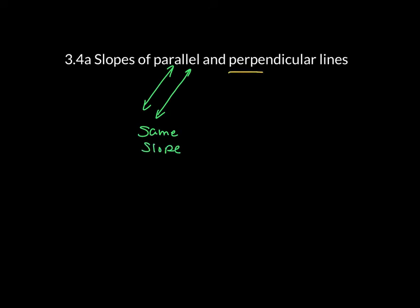For perpendicular lines, perpendicular lines are two lines that form a 90 degree angle. Now the interesting thing about perpendicular lines is they're considered the negative reciprocal. So the line of one would be the M, and the other one would be negative 1 over whatever that M value is.